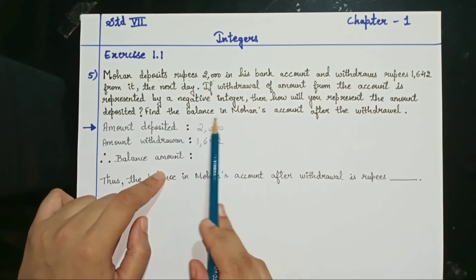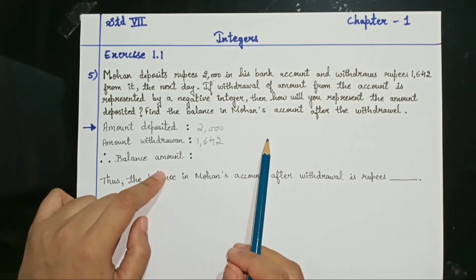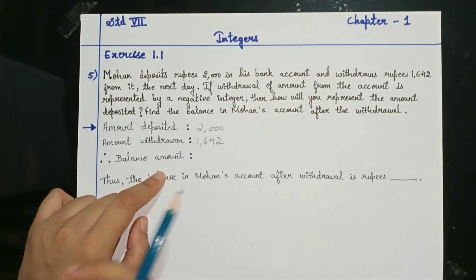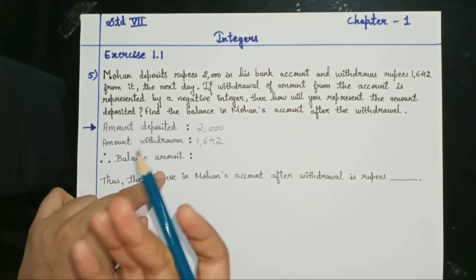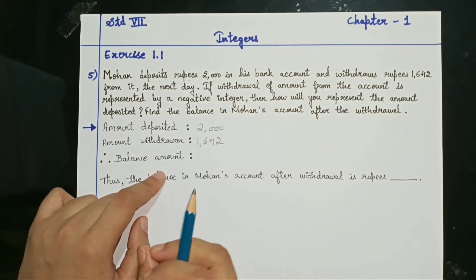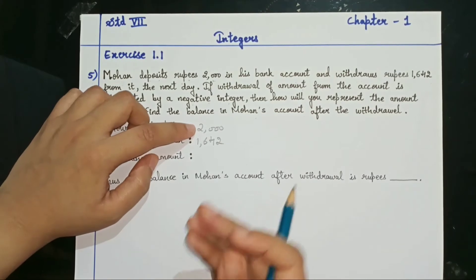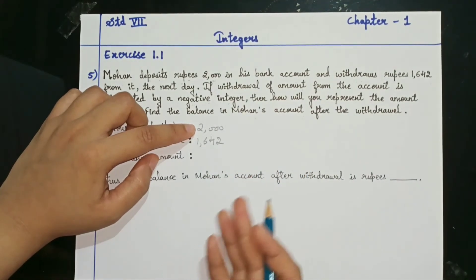So, they have asked you to find out the balance in Mohan's account after the withdrawal. When he removes the amount that means you have to do subtraction. 2000 were there in his account, he goes and removes 1642, so you have to do subtraction.